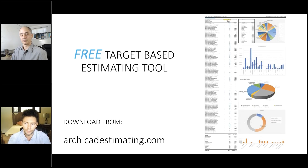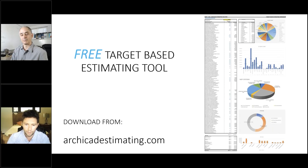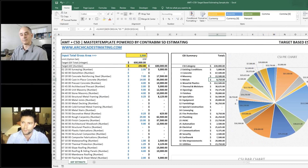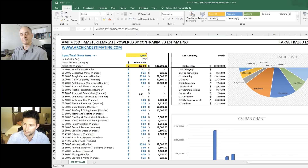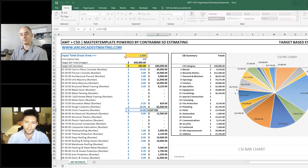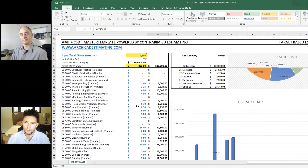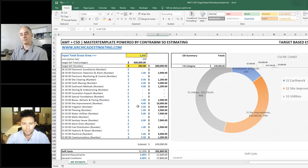Eric alluded to a free download. We have this target-based estimating tool. That's really something that we broke out of the bigger quantity and estimating reporting workflow. But this is available at archicadestimating.com. It's a really fun little tool to play around with. It's all based on gross area calculations. So you can plug in very quickly the overall size of your project and then go through the different line items and build up your own estimates. You can see everything adjust live. It's a good way of starting to think about estimating from the big global picture of gross area calculations and gross area costs.